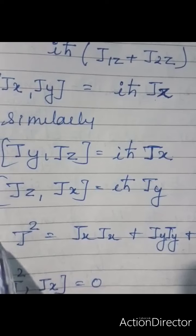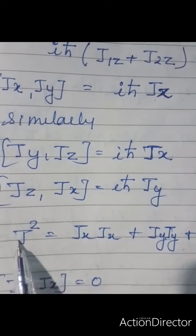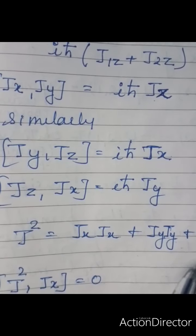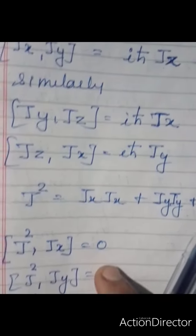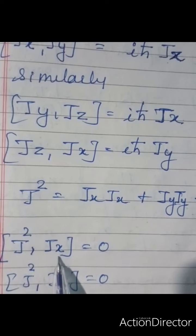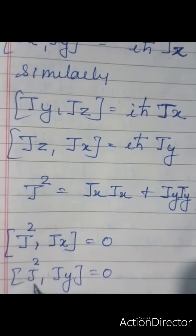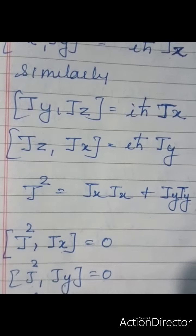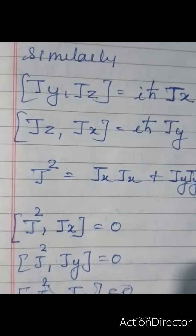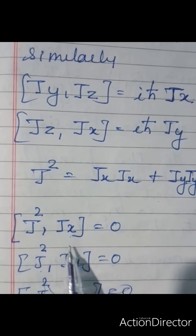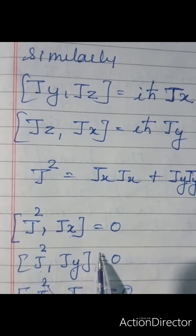When taking J² with the xyz coordinates, that is [J², Jx], [J², Jy], and [J², Jz], they all show a commutation relation — meaning J² commutes with all components of J.